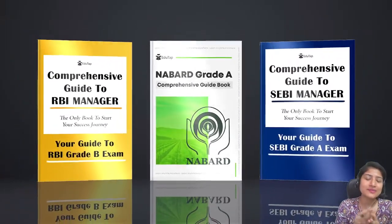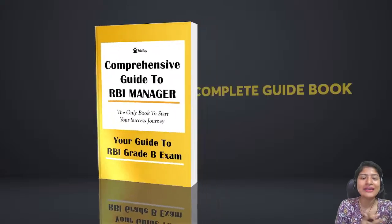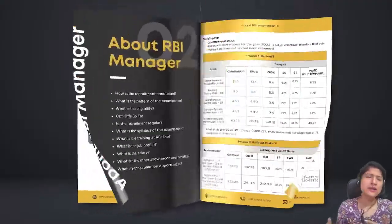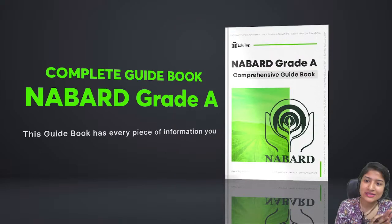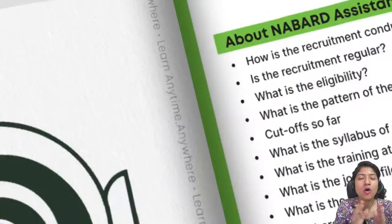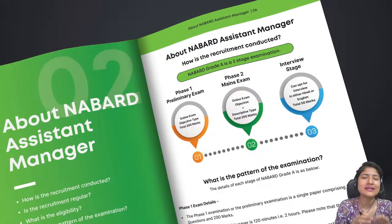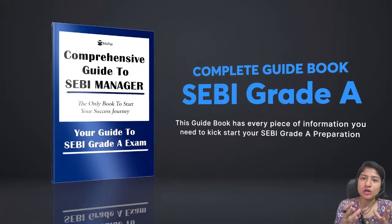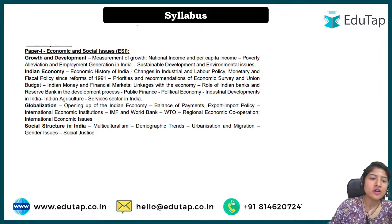Before starting, an announcement for all aspirants preparing for central regulatory bodies: we have come up with a one-stop solution guide to all queries you might have regarding organizations like NABARD, SEBI, or RBI — their role in the Indian economy, different departments, your role once you join, recruitment process, phases, pattern, eligibility criteria, syllabus, previous cutoffs, and more. You can download these e-guidebooks free of cost from the link in the description box below.